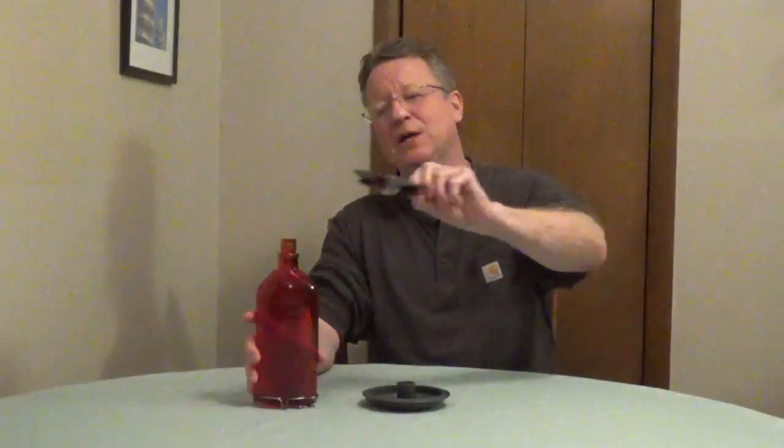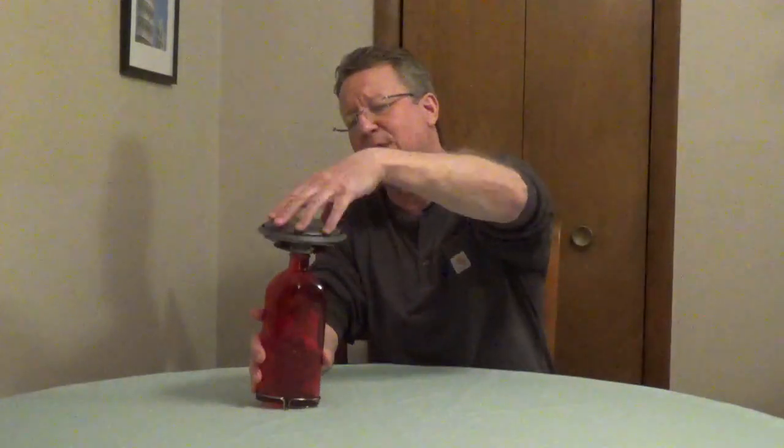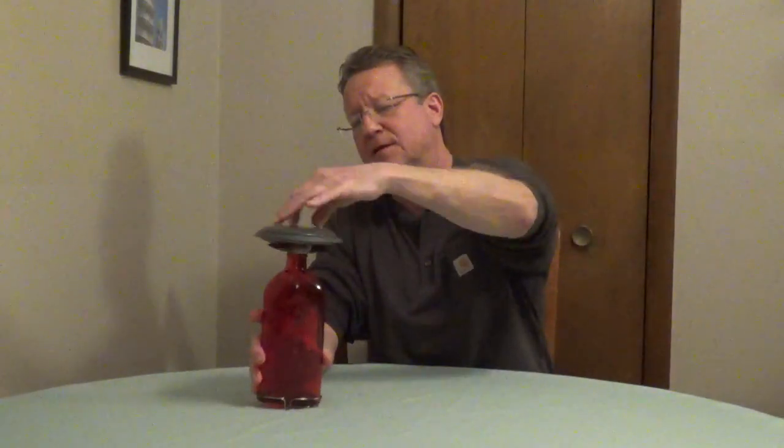Once you fill the bottle with nectar, you're going to put your metal collar on first with the flowers facing down, and then you're going to screw on your plastic base. Then just flip it over and hang it up.